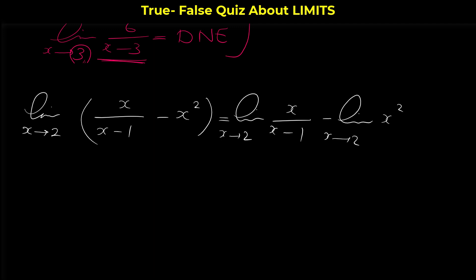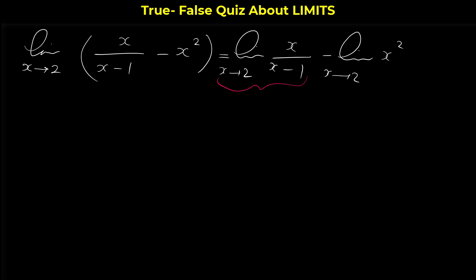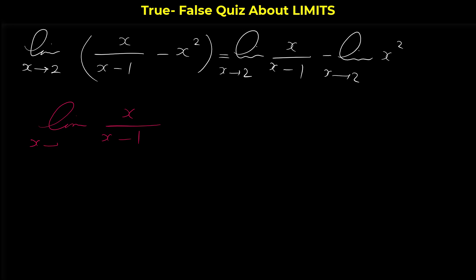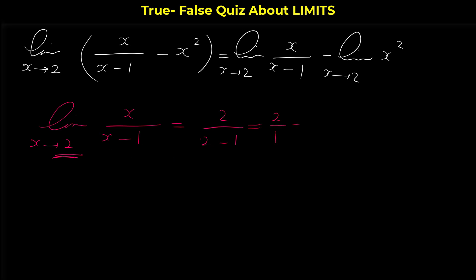To figure out if this statement is true or not, we have to check whether these limits exist. The first limit, limit of x/(x-1) as x approaches 2, equals 2/(2-1) = 2/1 = 2. The limit of the numerator as x approaches 2 is 2, and the limit of the denominator is 2-1 = 1, so the first limit exists.